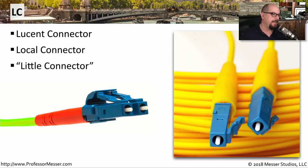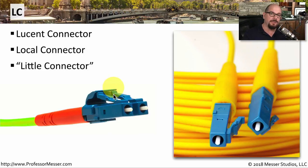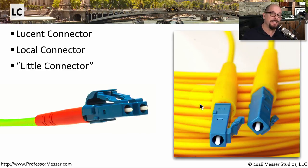One of these smaller types of interfaces is the LC connector. This stands for Lucent connector, and it can also be referred to as the local connector or the little connector. With the LC connector, both sides of the fiber — the transmit and the receive — are molded into the same connector itself, and there's a locking mechanism on the top very similar to an RJ45 connector. Of course, these can also be used as individual fibers, and you'll notice the size is a bit smaller than the ST and SC connectors.